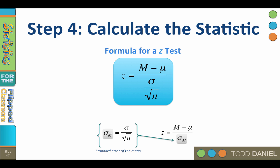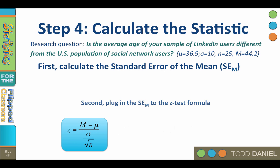So let's apply this formula. Our research question is whether the average age of the sample of LinkedIn users is different from the U.S. population of social networking users. The population mean is 36.9, the population standard deviation is 10, the sample size is 25, and the sample mean is 44.2. To use the z-test formula, we will plug in these values.